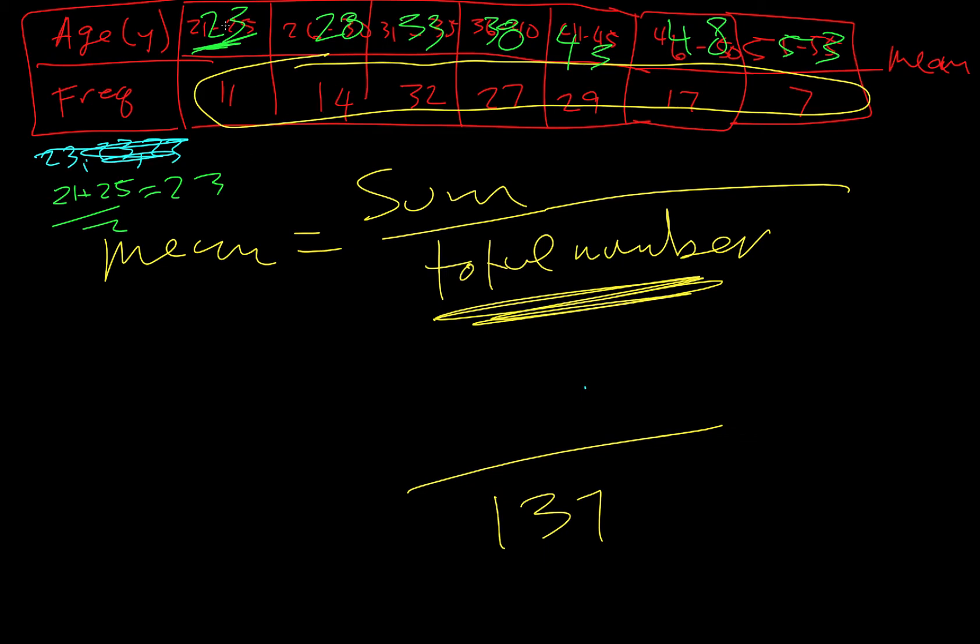So what we need to do to figure out how much of the sum adds up, we're going to do 11 times 23, and we're going to get 253. Then we're going to multiply these two numbers together and get 392. And then we're going to multiply the next ones, 1026, 1247, multiply these ones, 816, and multiply these ones to get 371.